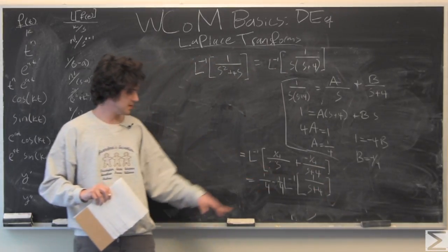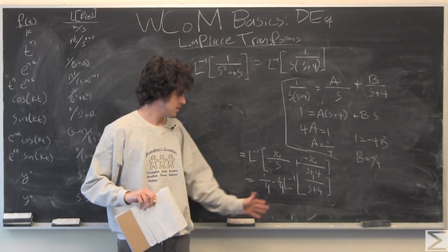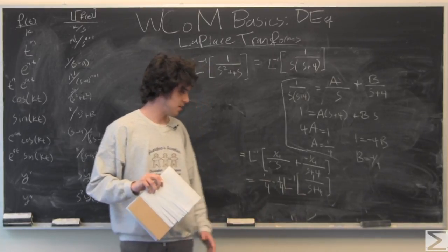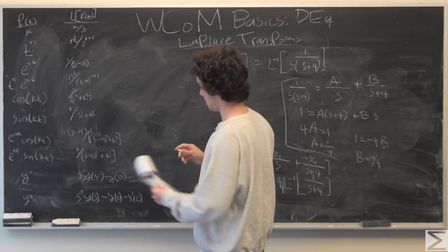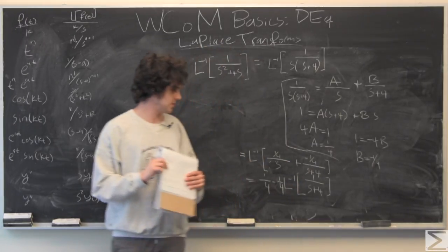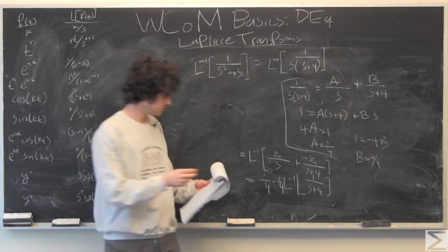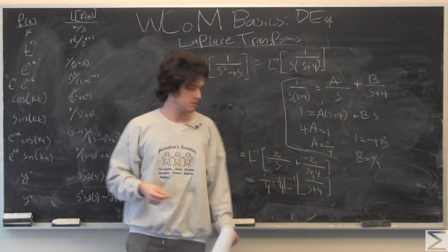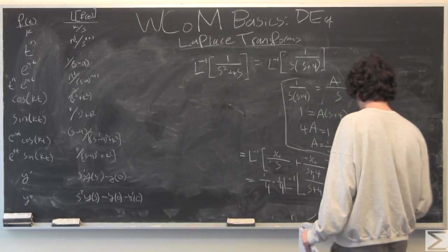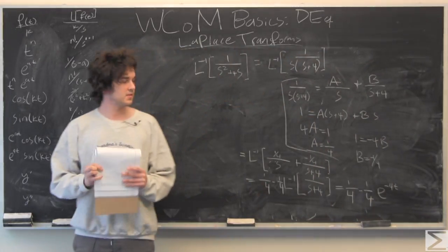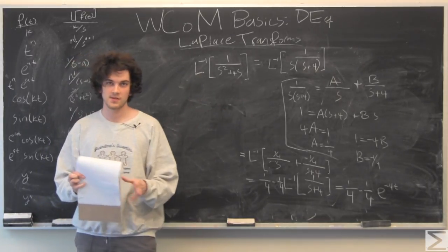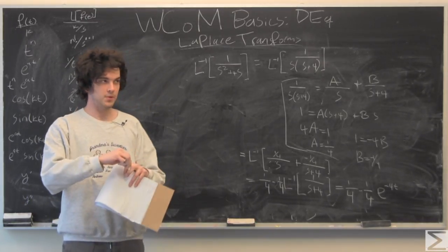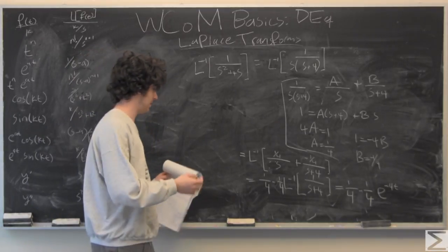The first part is (1/4)·L⁻¹{1/s} = 1/4, and the second part is (−1/4)·L⁻¹{1/(s+4)}. Since the form is 1/(s−a) with a = −4, the inverse is e^(−4t). So the full inverse Laplace transform is (1/4) − (1/4)e^(−4t). That's how you handle a partial fraction decomposition for an inverse Laplace transform.